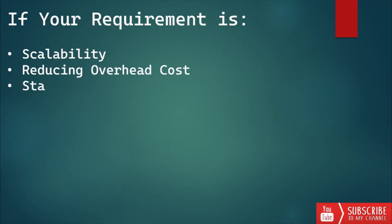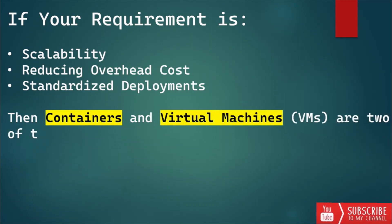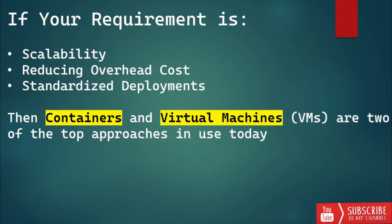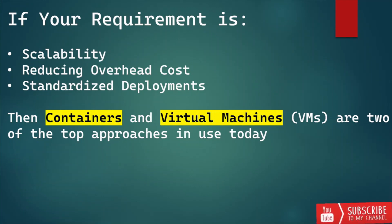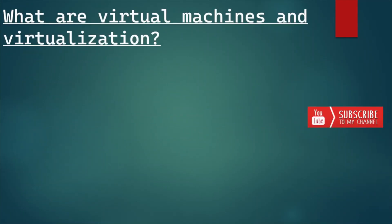If you are looking to improve scalability, reduce overhead costs, and standardize software deployment across multiple machines, then containers and virtual machines are two of the top approaches being used today. They are not mutually exclusive — both can help your IT team become more agile and responsive to business demands. Both containers and virtual machines are software technologies that create self-contained virtual packages. Beyond that commonality, they differ in their operations, characteristics, and use cases. To distinguish between containers and VMs, let's understand their building blocks.